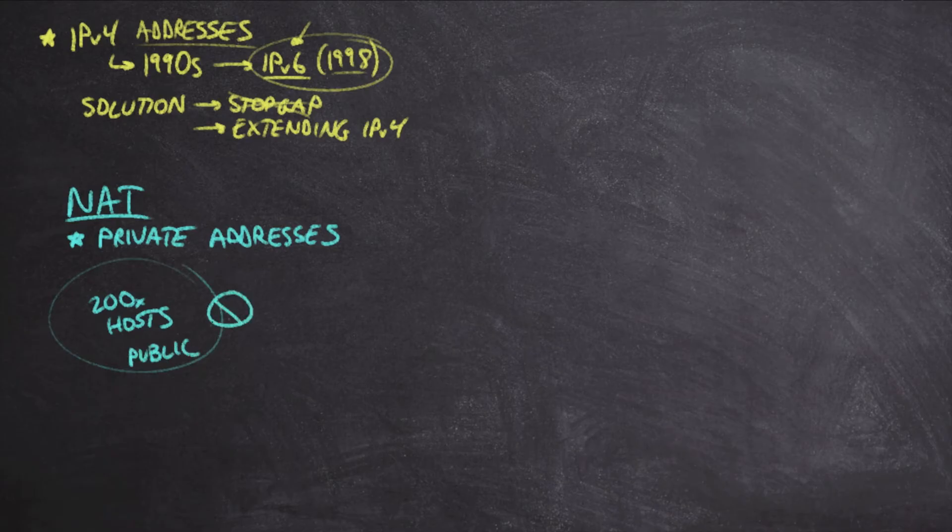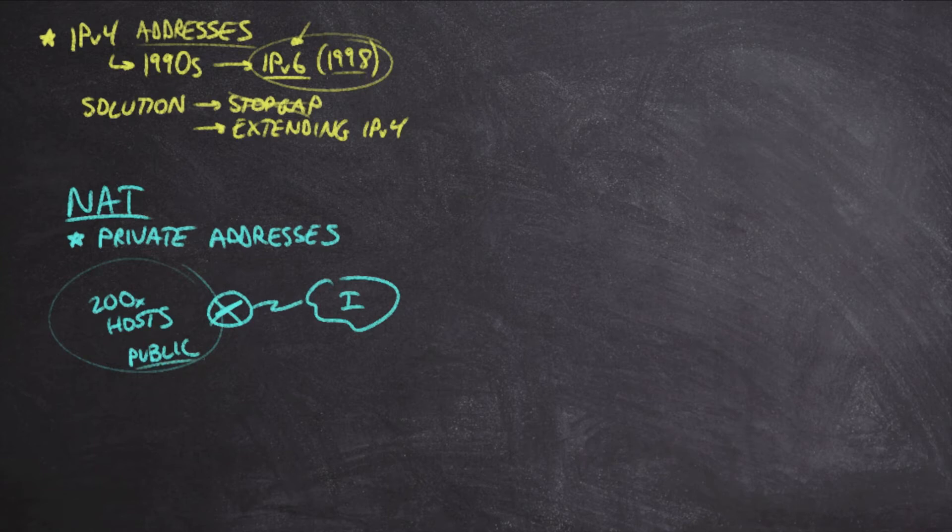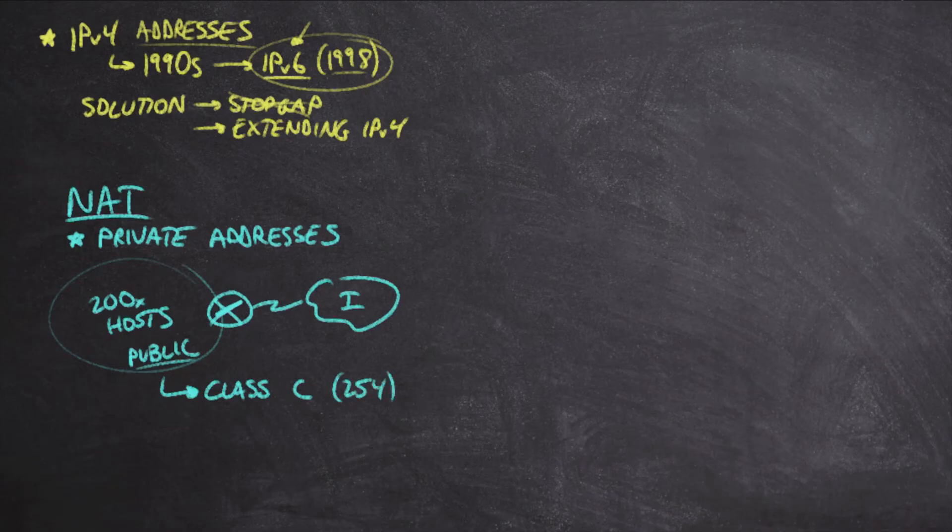So at the edge of our network, we'd have some kind of router or firewall, and this would connect us up to the internet. So if I needed 200 public IP addresses, I would go out and request IP addresses, I would be given a Class C subnet, and this would contain the 256 or really 254 usable IP addresses.